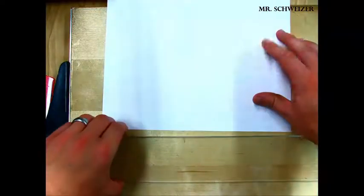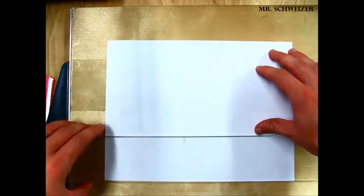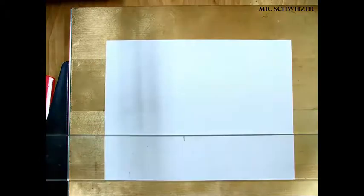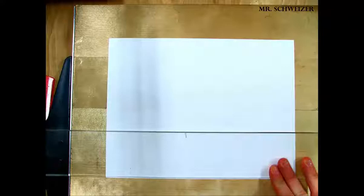We're going to now take our paper and we're going to place it on our drawing board underneath our T-square. We want to make sure our T-square is seated tightly against the aluminum edge of our drawing board.